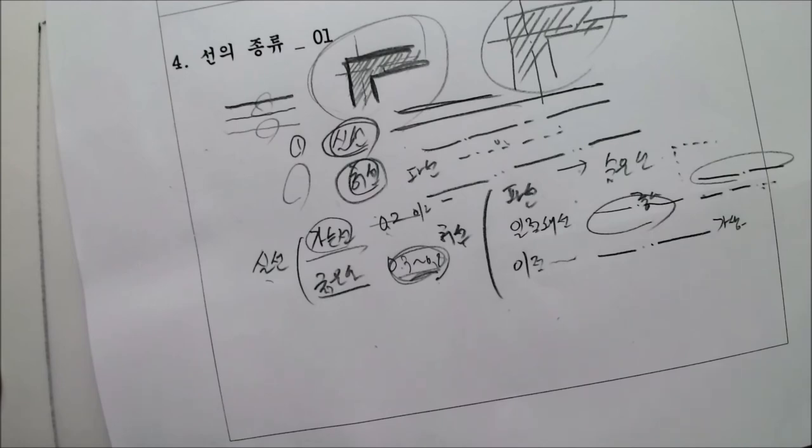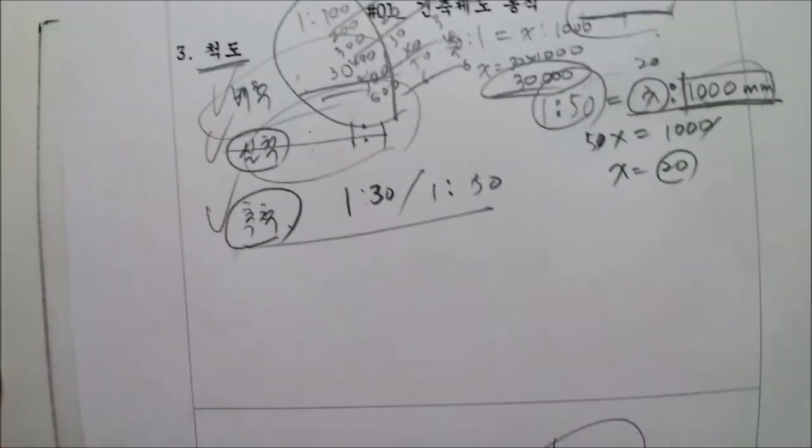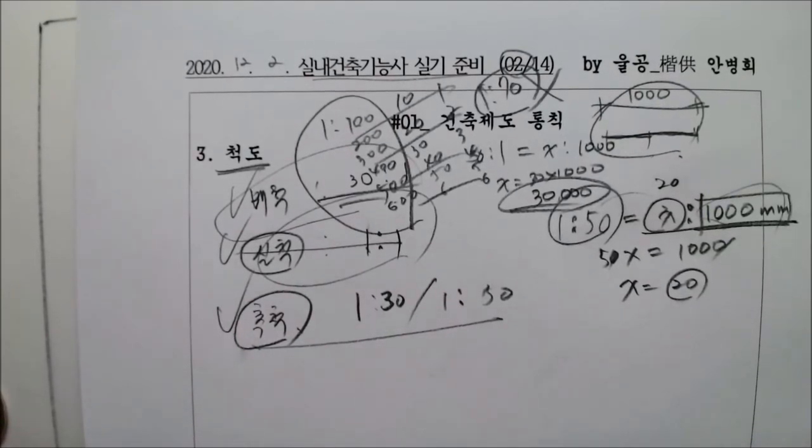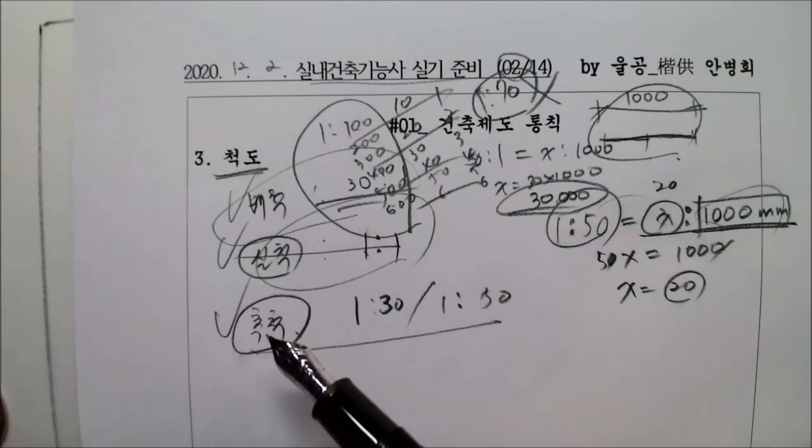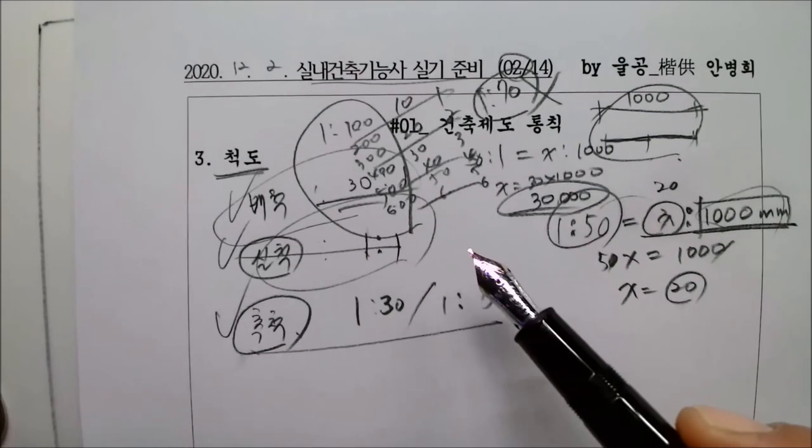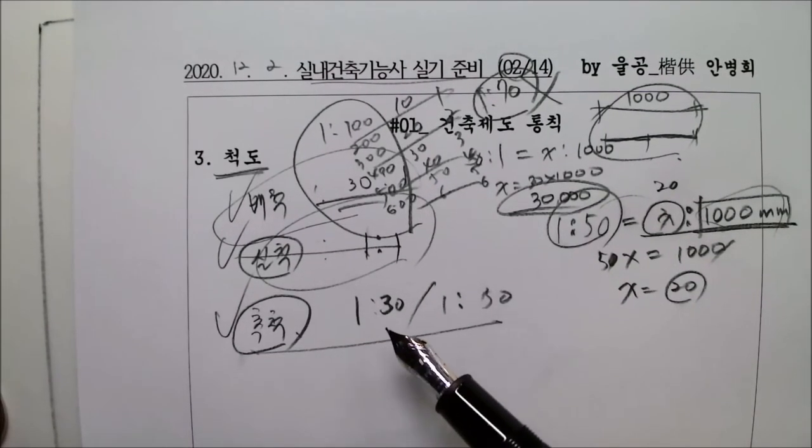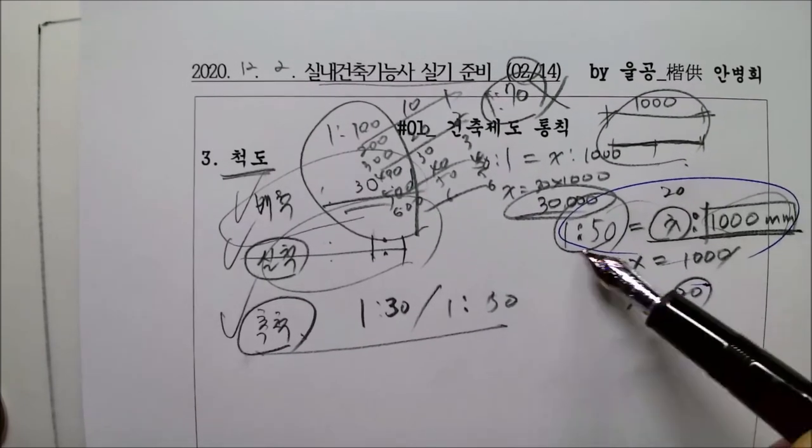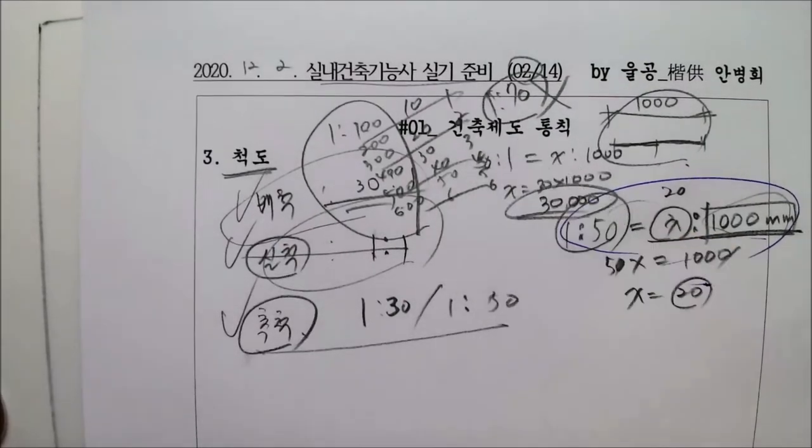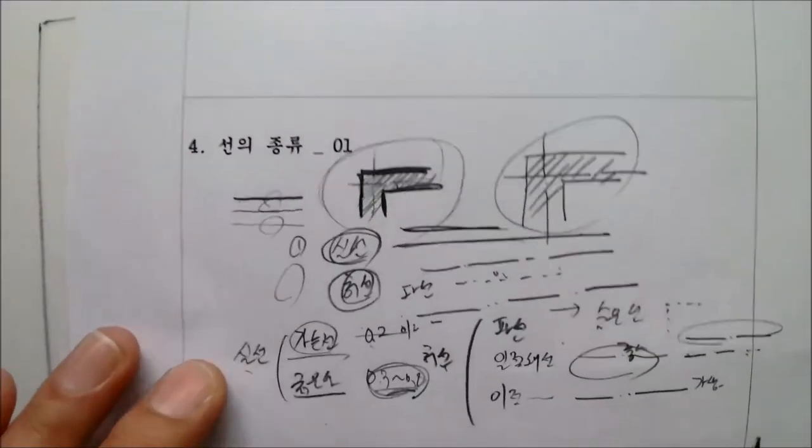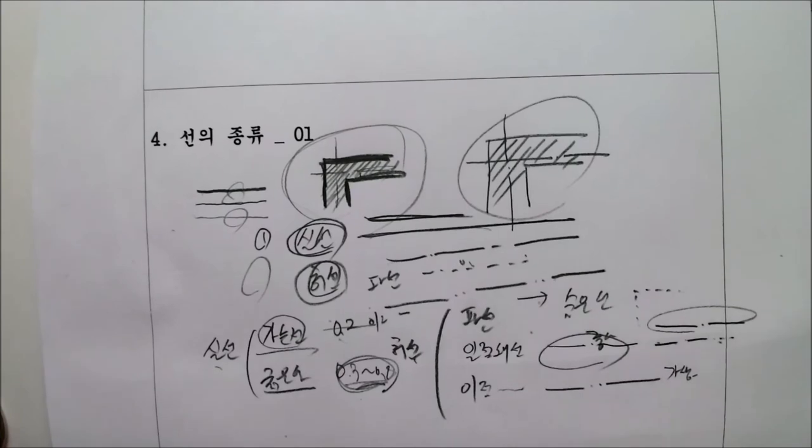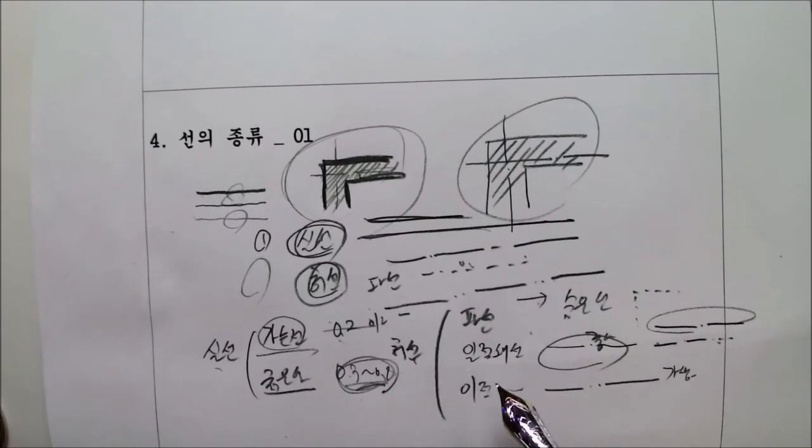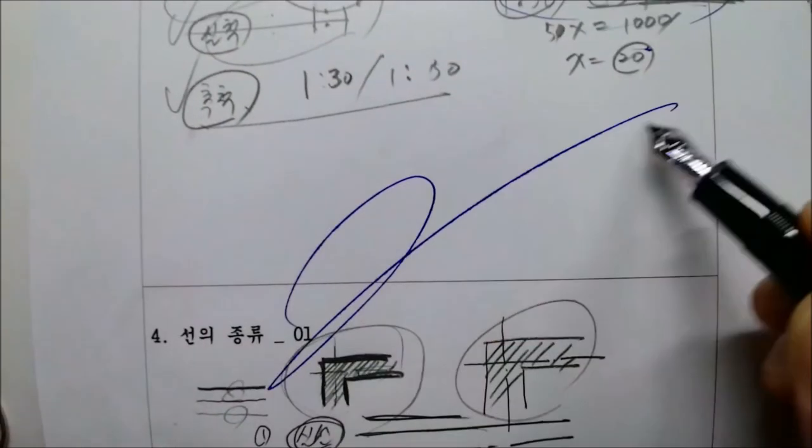자 여러분들 여기까지 우리가 지금 배운 거 얘기가 있습니다. 자 척도에 대해서 얘기했고요. 자 척도 실척 축척 배척 실척은 1대1이다. 축척은 1대30 1대50 좀 더 작게 그리는 거 원리를 이해하시겠죠? 자 그 다음에 배척은 그리고 스케일을 쓰임 보여드렸습니다. 자 그 다음에 두 번째 선의 종류 선의 종류 자 실성 가는선 구근선 0.2 그 다음에 허선은 파선과 2.3선 이렇게 있다. 자 여기까지